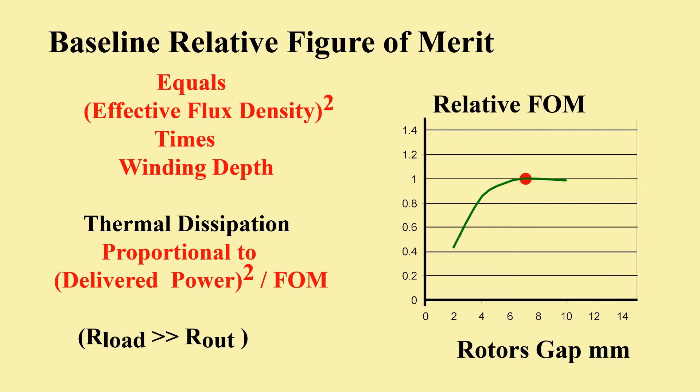Since dissipation is inversely proportional to the figure of merit, bigger is better. Normalized results for 1mm winding clearance shows an optimum rotor spacing around 7mm. Any wider would waste copper.